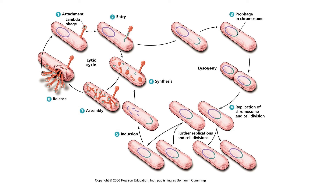Basically, lambda did this because it decided it wasn't a safe time to produce progeny viruses. There's something in the environment where lambda says it's not safe to produce a bunch of progeny viruses and release them. At this point, it hides its DNA inside the E. coli chromosome and waits until the coast is clear.